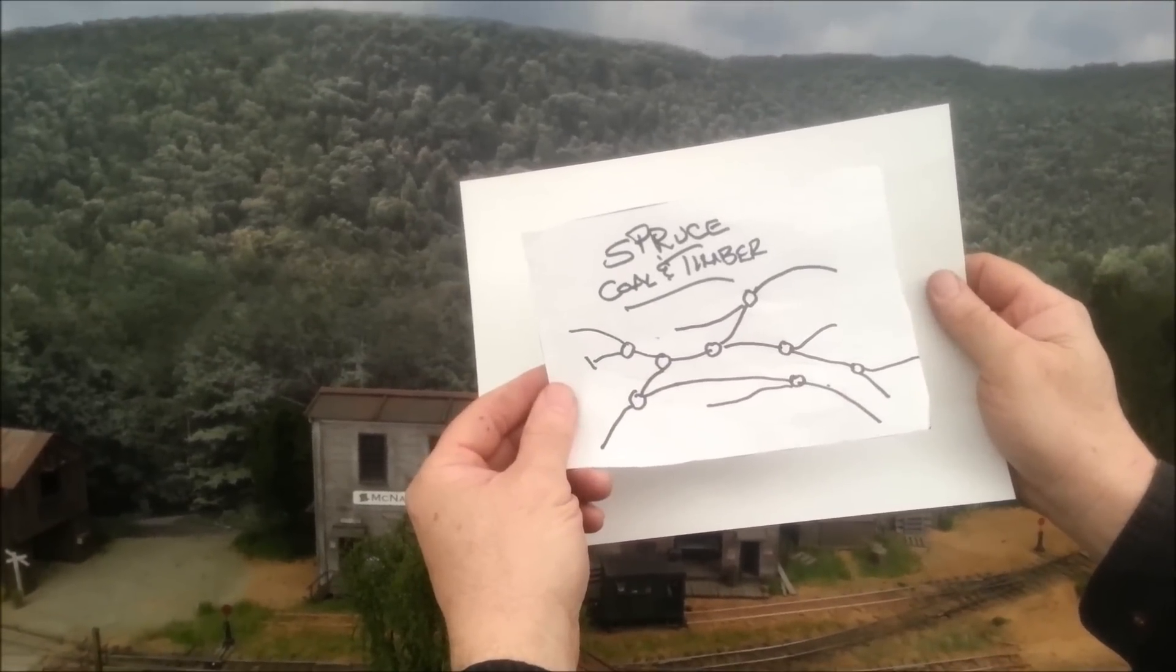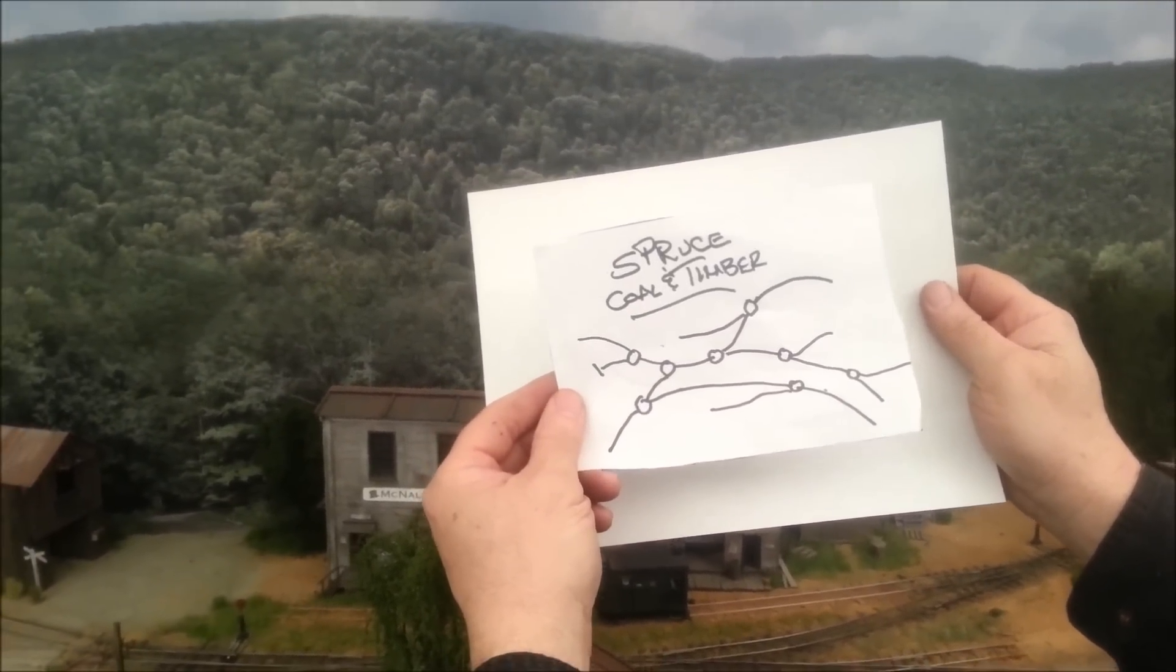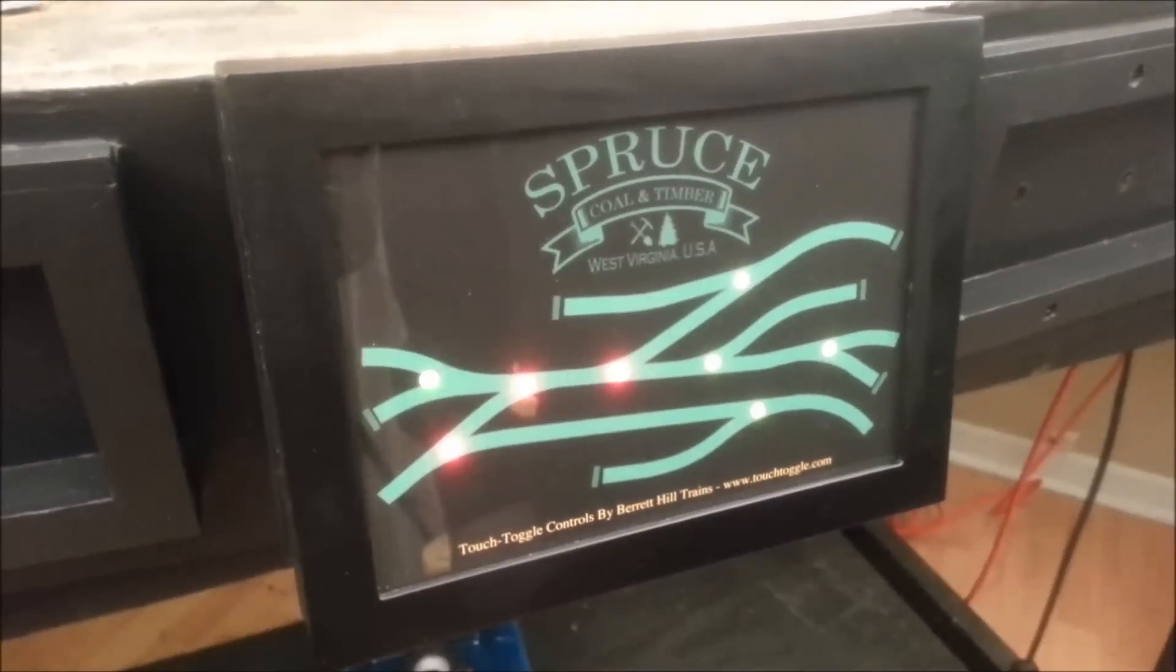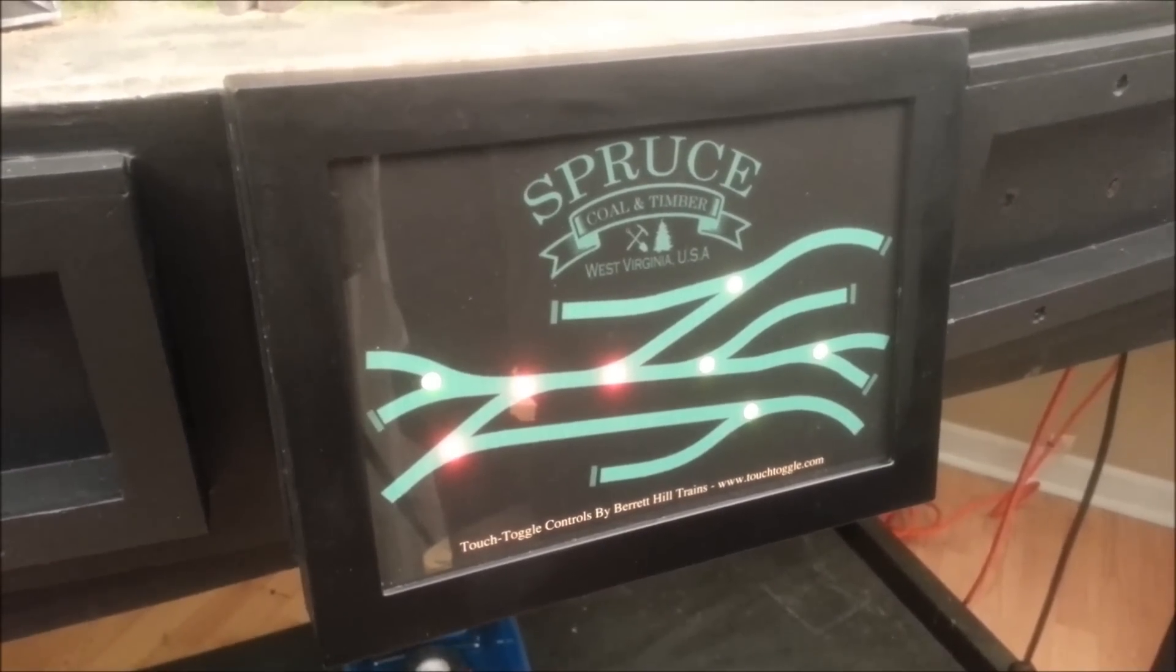We left the hand-drawn version inside the frame for a couple days to test it out. We liked it. So with that in mind, Kevin came up with a nice pretty version that he made with the graphics program and printed it out on his own printer. Hey, look at that. He even used the Spruce Cullen timber logo that I created.